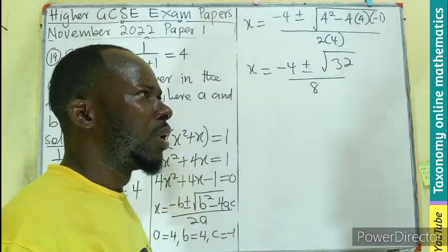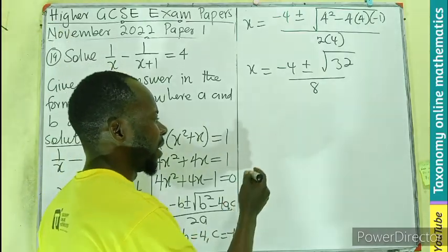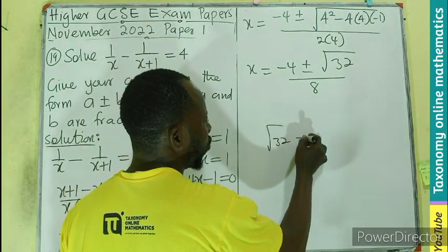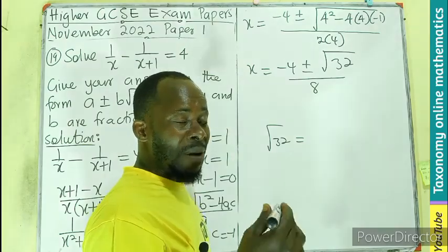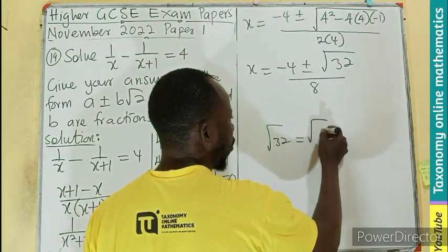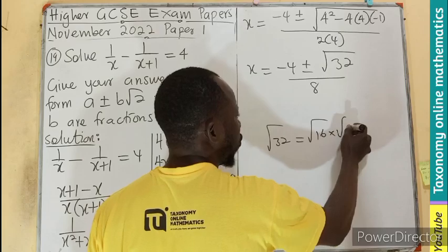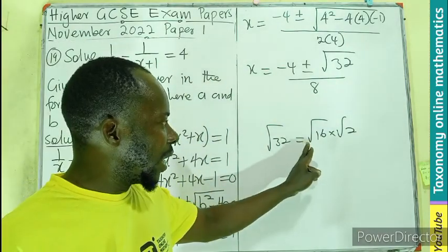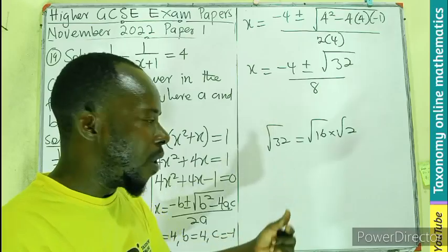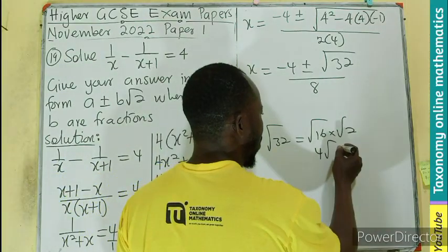Now if you look at 32, the root of 32 can be simplified using a perfect square and a non-perfect square. Meaning the root of 16 times the root of 2 gives me 32. And the root of 16 is 4. That means 4 root 2.